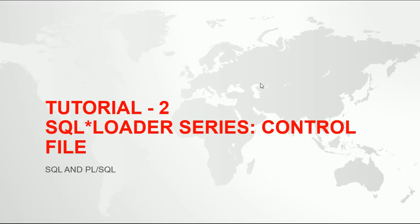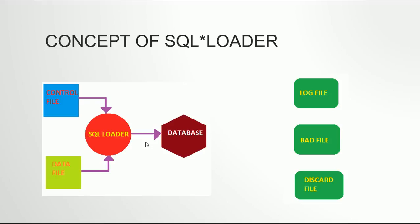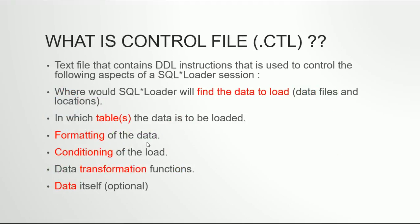Hello guys, my name is Kishan and today we are going to talk about control files in SQL Loader. As we discussed in our previous video, a control file is the heart of an SQL Loader. SQL Loader is basically used to load any text file which has data in a particular format into Oracle database tables. SQL Loader needs a control file to find where the data is, process it, and load it into the database, while generating three types of log files: a regular log file, a bad file, and a discard file.